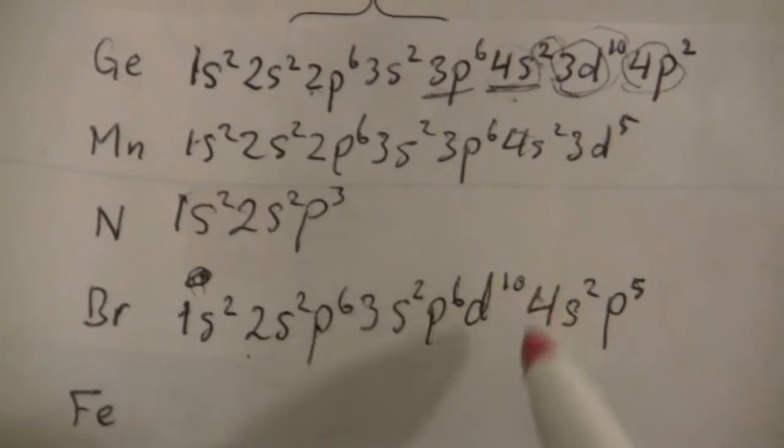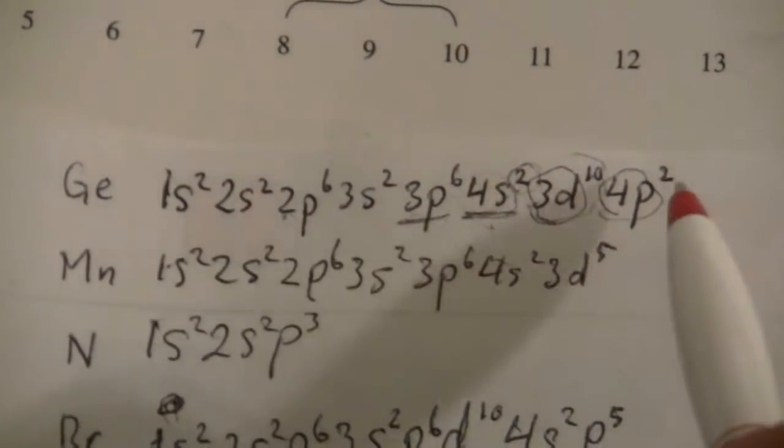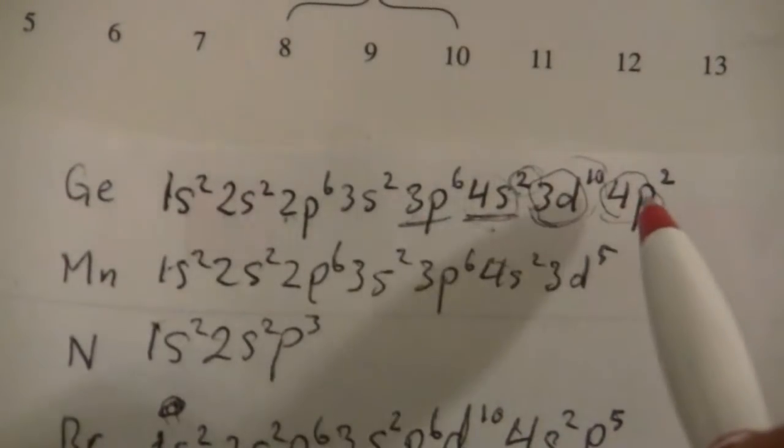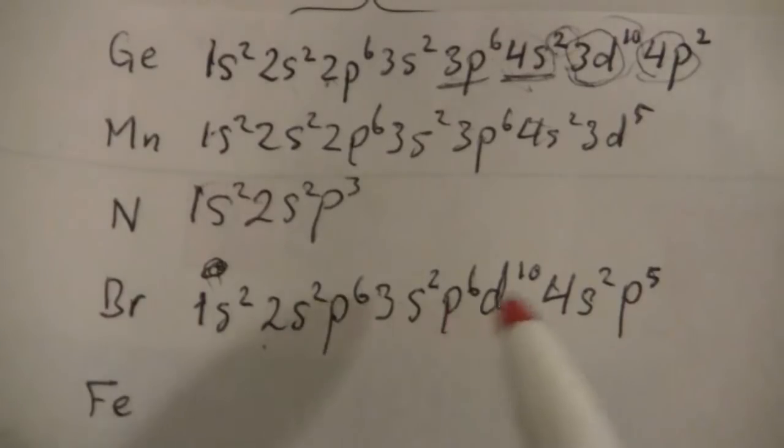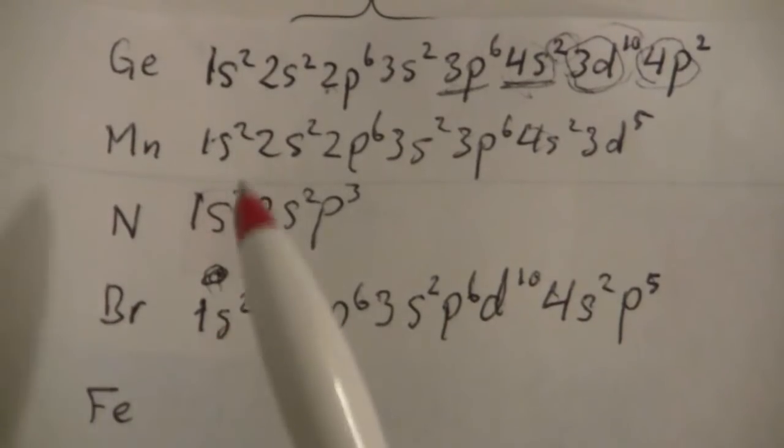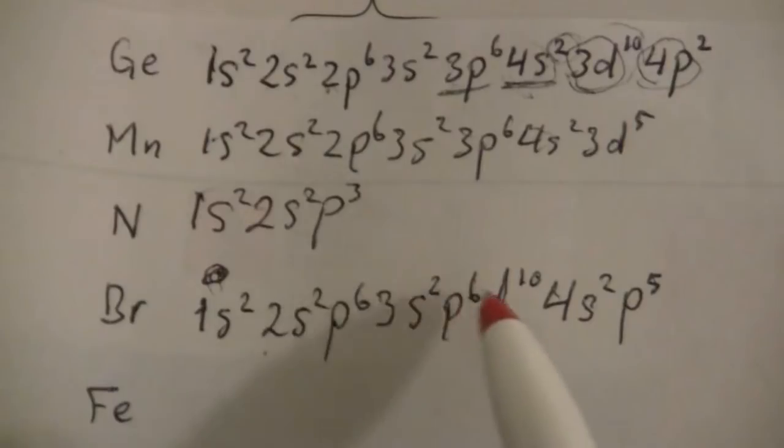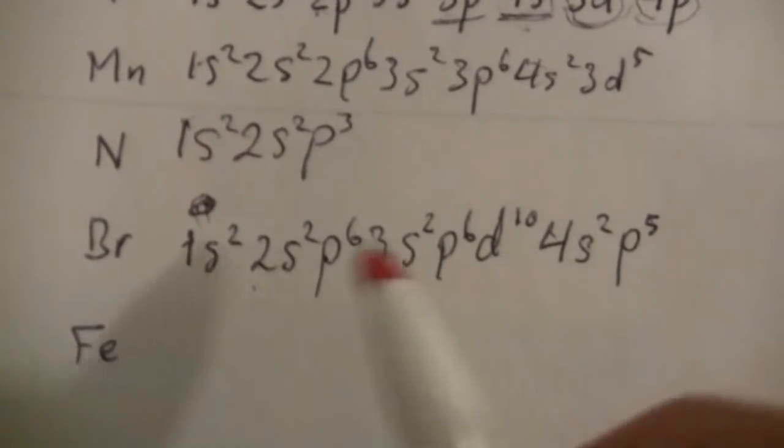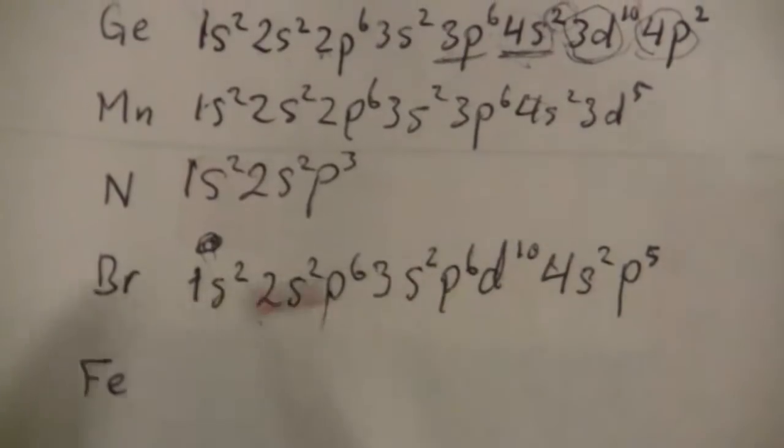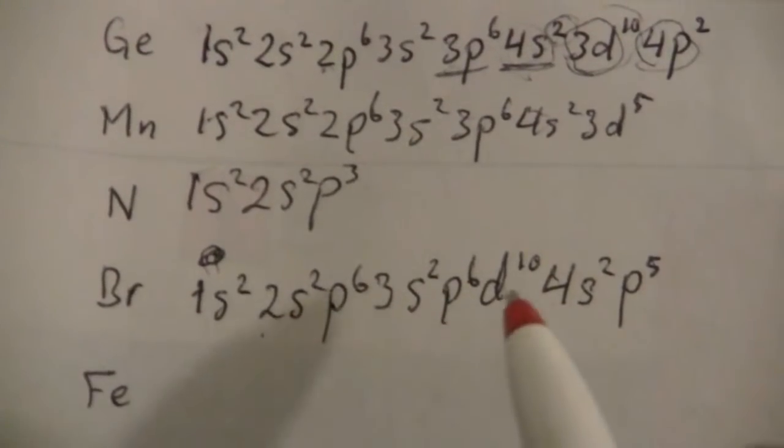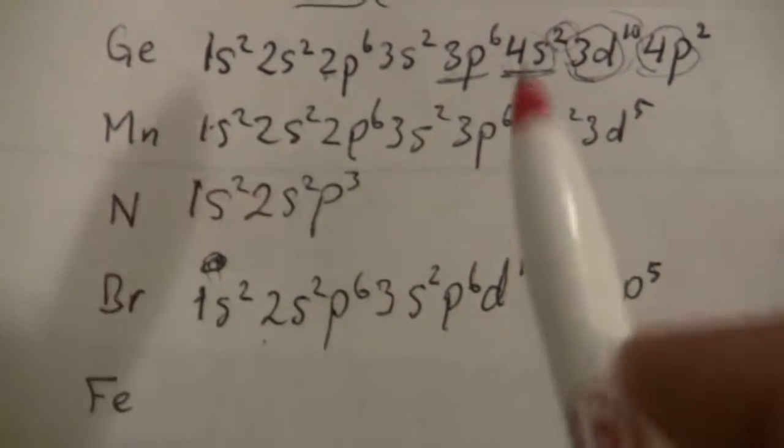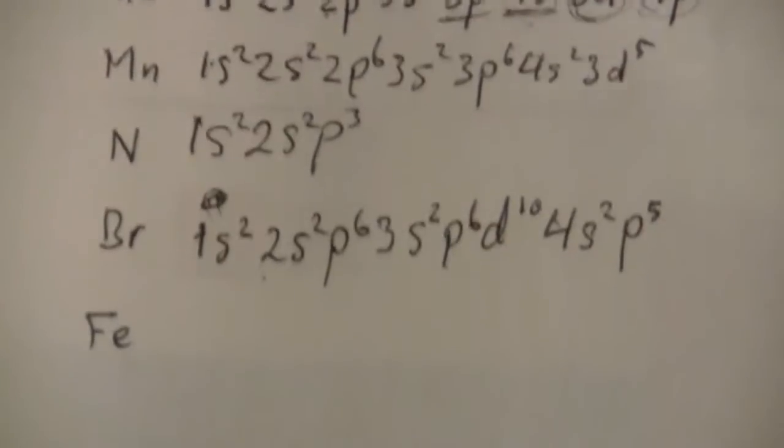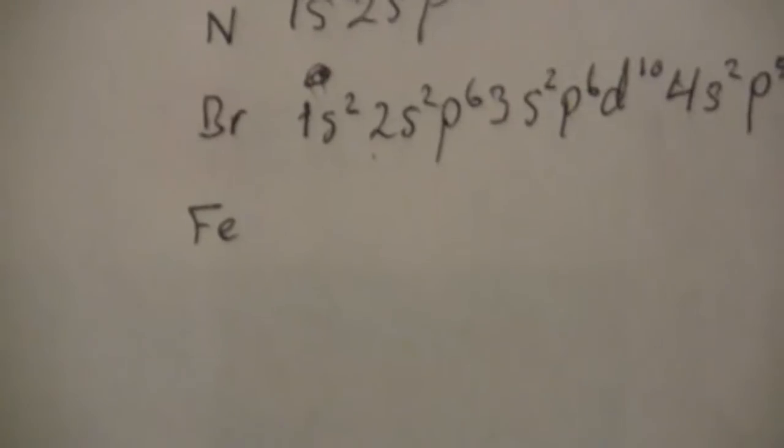Whether we write it in the order that the electrons are filled, from lowest energy to highest energy, that's how I normally do it. Or we write it in order of increasing energy level. It doesn't make a difference as far as the validity of that configuration. It's just the same thing, it's just saying it in a slightly different way.